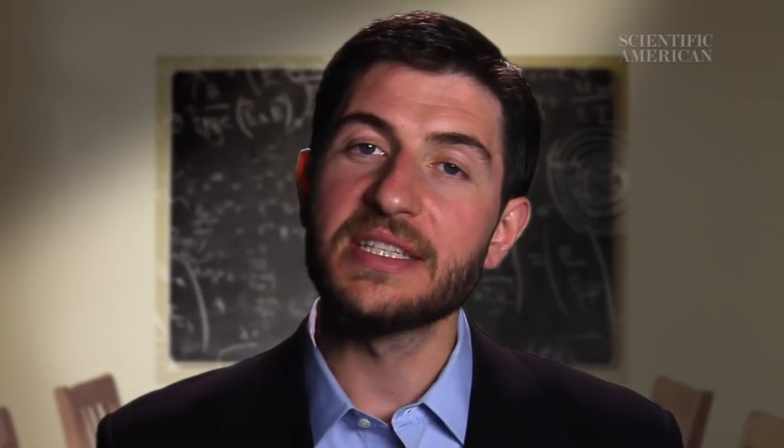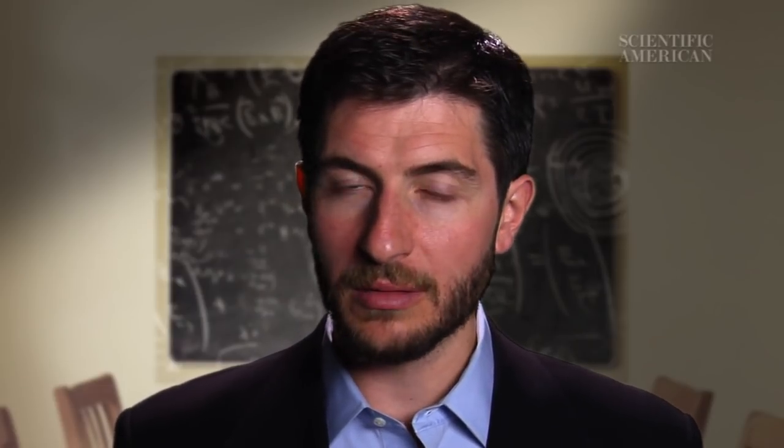The wave function reflects both possibilities. In the standard interpretation of quantum mechanics, both possibilities are real. The cat is truly both alive and dead until an observer opens up the box. At this point, the kitty collapses into either an alive or a dead state.